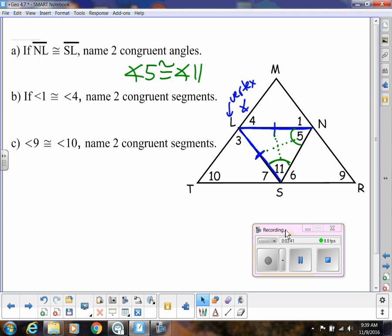Next one, if angle 1 is congruent to angle 4, name two congruent segments. So now I'm looking at this top triangle, angle 1 and angle 4 are congruent. So across from them, those are the legs of that isosceles triangle. So ML is congruent to MN.